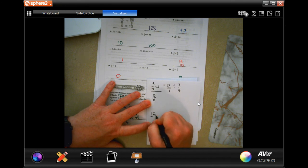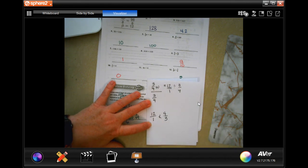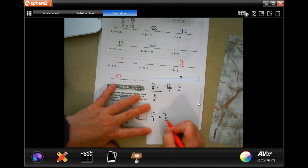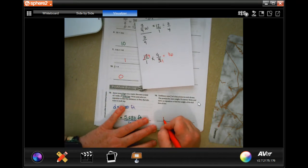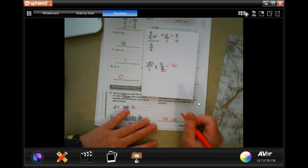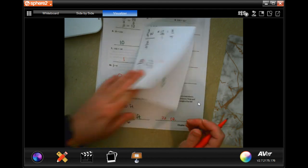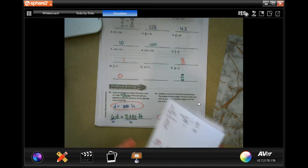Then, I'm going to keep, change, and flip. 3 goes into 3 once. 3 goes into 12 four times. 16. 16 ounces. Write your work down. You still have to show your work.